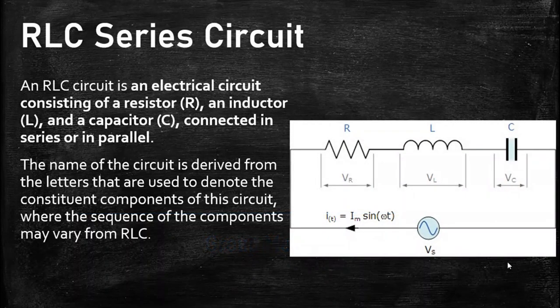An RLC series circuit is an electrical circuit consisting of a resistor, inductor, and a capacitor connected in series or in parallel. The name of the circuit is derived from the letters used to denote the constituent components, where the sequence of the components may vary from RLC.